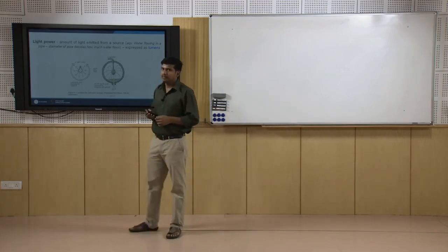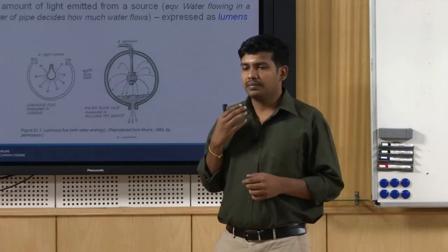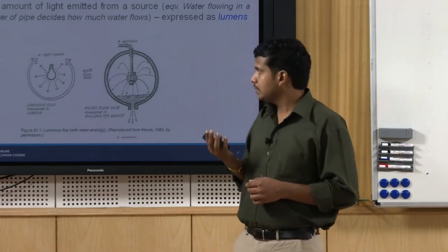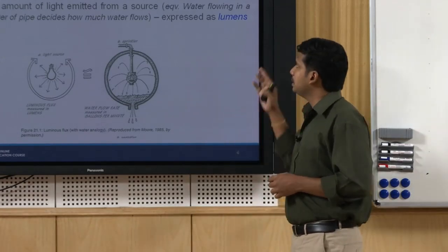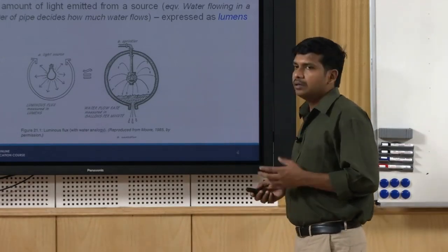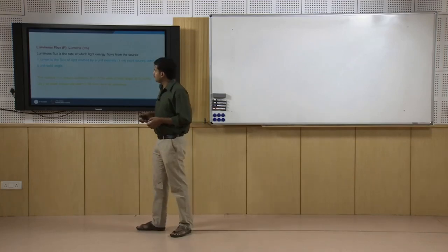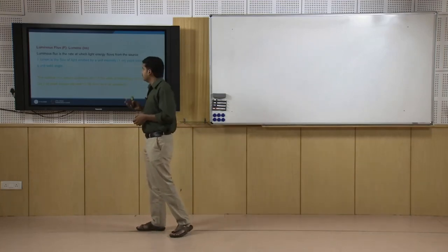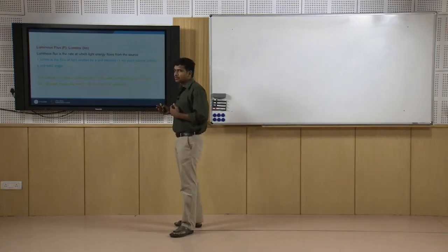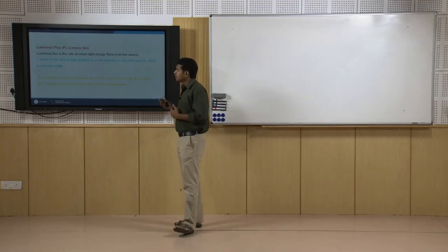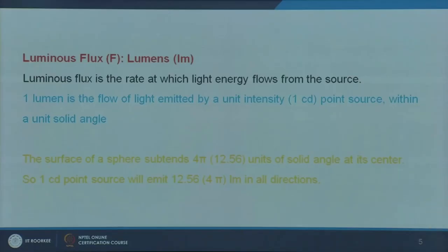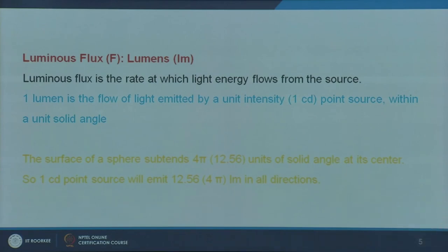It is something like luminous flux — when we say energy flow, we talk about flux. Luminous flux is the rate at which light energy flows from the source. One lumen is the light flow emitted by a unit intensity point source, with a unit solid angle. The sphere subtends 4π unit solid angles at its center, so a unit intensity point source emits 4π, or approximately 12.56 lumens, in all directions.